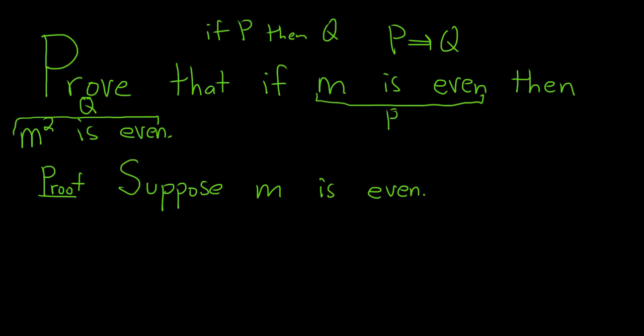Now we have to show the Q part. We have to show M squared is even. However we can't do it quite yet. So naturally we have to use our assumption.